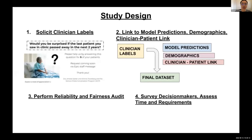For a bird's-eye view of what this involved: we had to ask clinicians for labels. An announcement slide was sent in primary care notifying clinicians that we'd be asking them to generate labels, because we don't want to wait a year and we don't have access to direct 12-month mortality labels. We then linked clinician labels with model predictions, demographics, and relevant clinician-patient pairings to perform our audit.